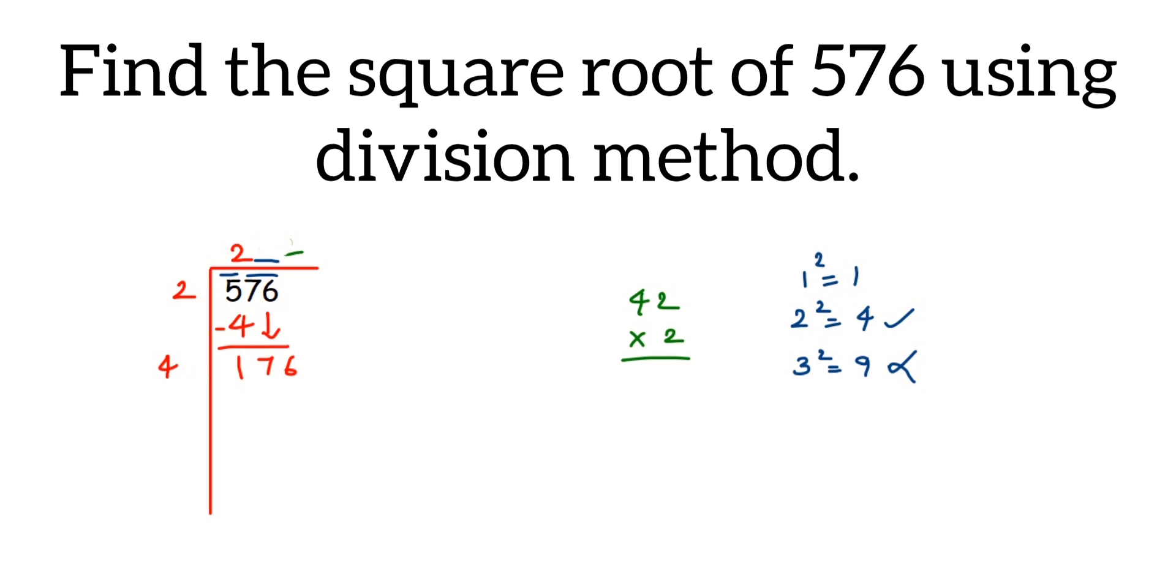We have to take such a number that when you multiply these two numbers, you should get 176 or a number less than 176. You have to do trial and error method or just use simple logic.